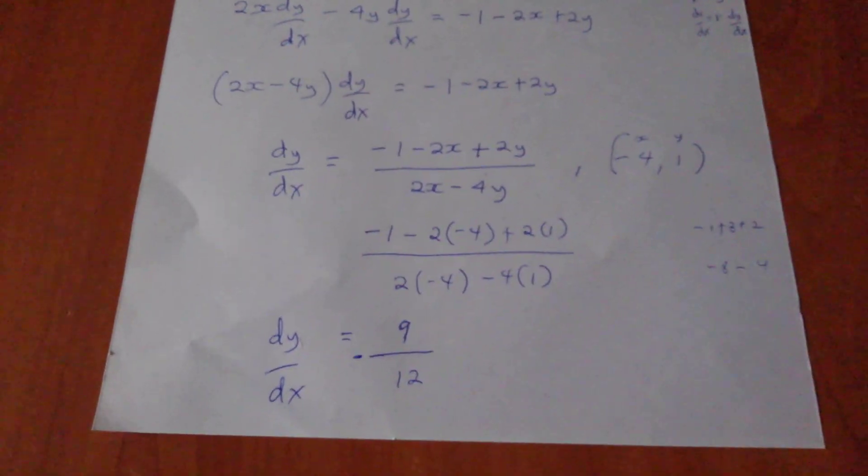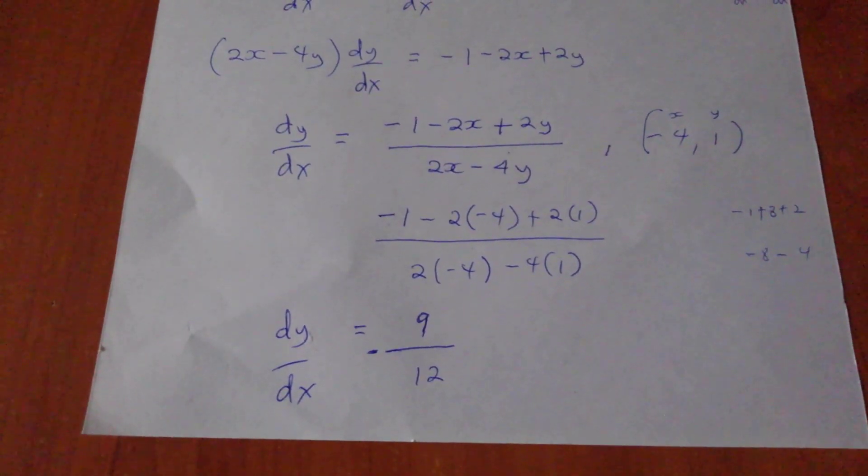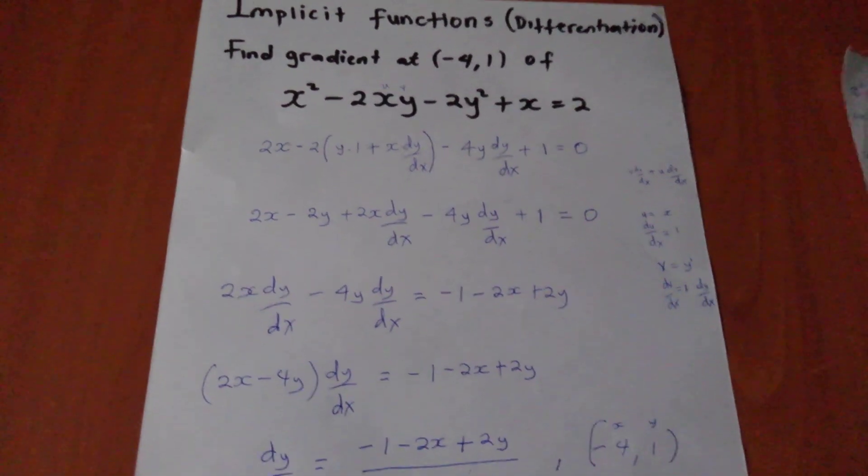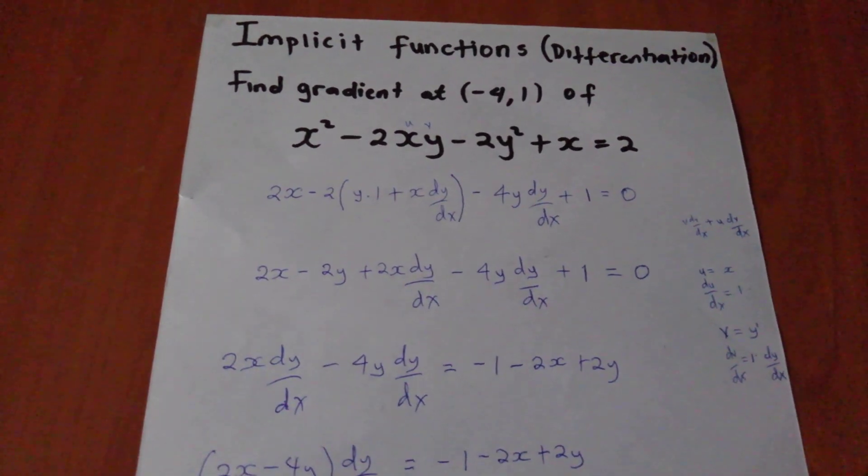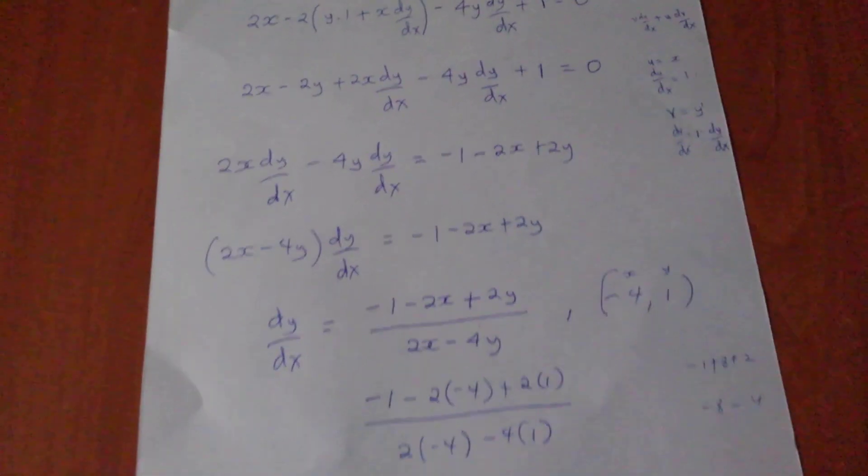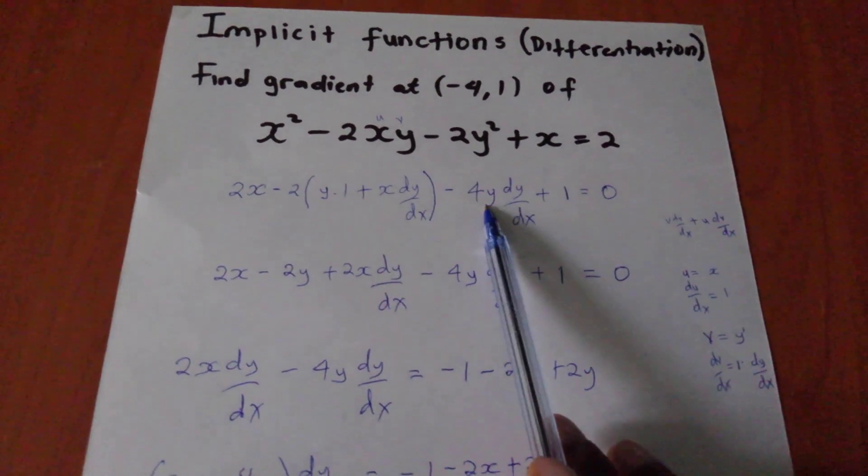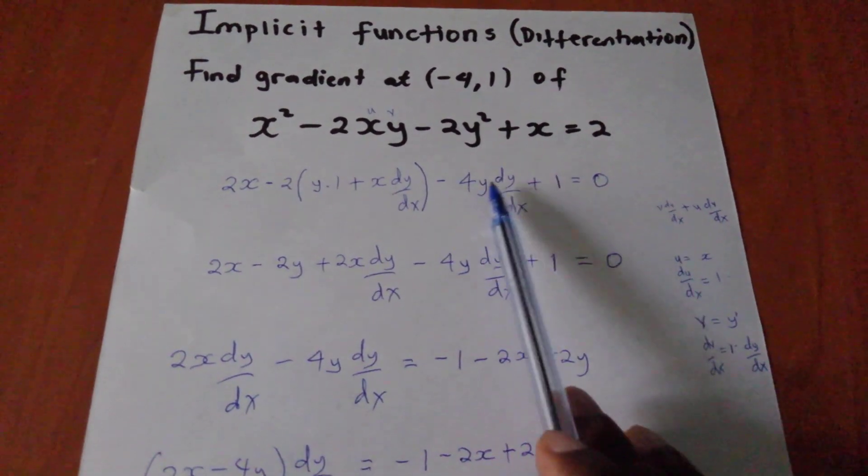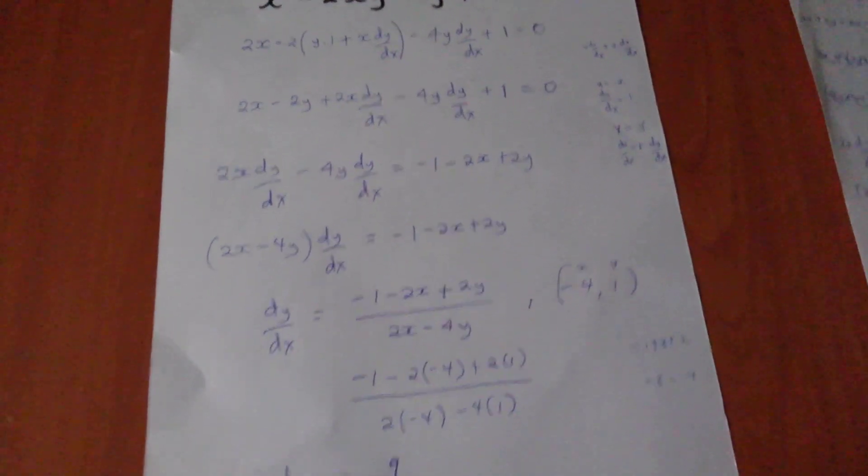So the answer in here for our dy dx is negative 9 over 12. So this is how we go about implicit functions. In case you haven't understood, please comment, like, subscribe. I will elaborate more on how we go about such numbers. But the only technique here is when we have y and we are differentiating with respect to x. If you have understood how we go about that particular section of y, then this topic is very much easier to understand. Thank you very much.